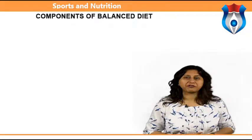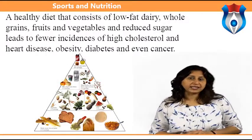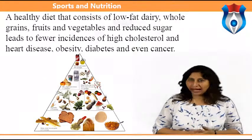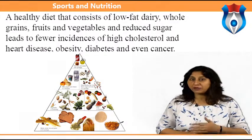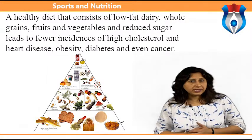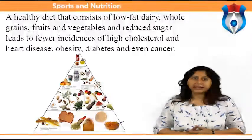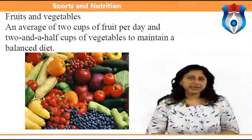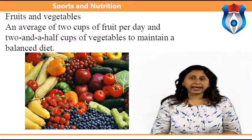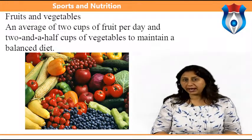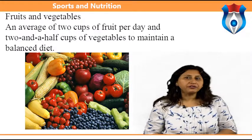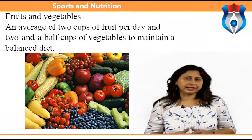Let us study the components of balanced diet. A healthy diet consisting of low-fat dairy, whole grains, fruits and vegetables, and reduced sugar leads to fewer incidences of high cholesterol, heart disease, obesity, diabetes and even cancer. Adults maintaining a 2000-calorie-per-day diet should consume an average of 2 cups of fruit per day and 2.5 cups of vegetables to maintain a balanced diet.